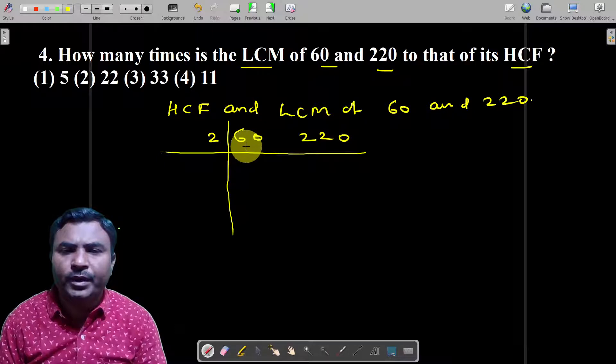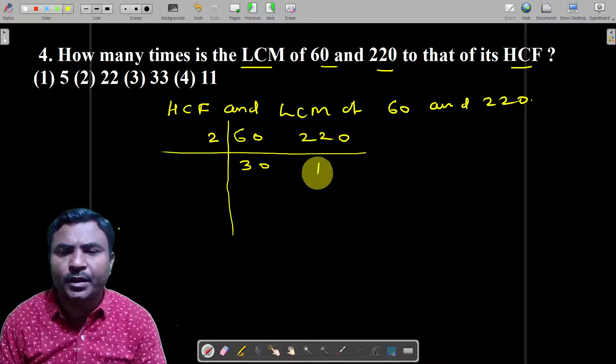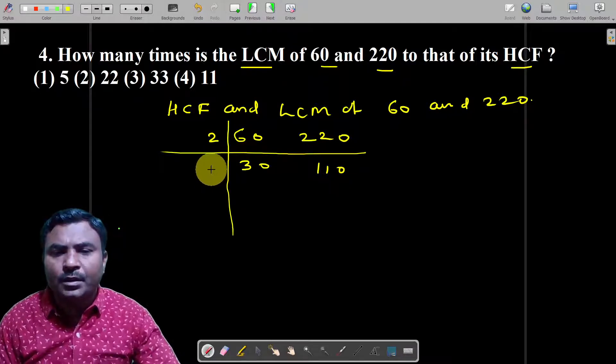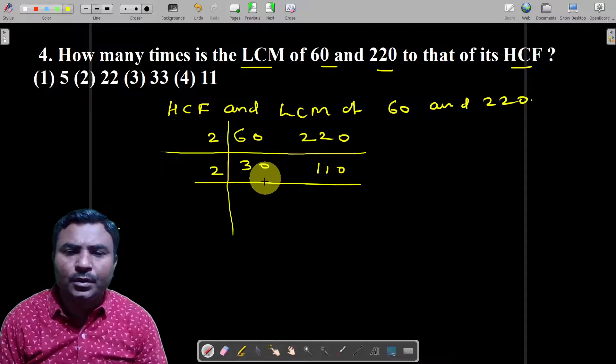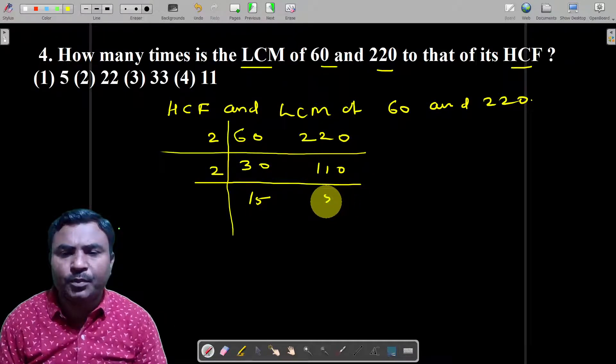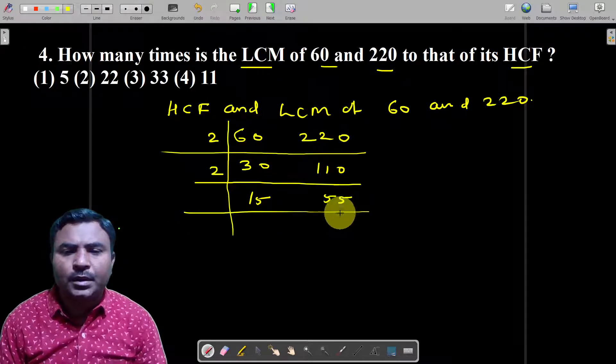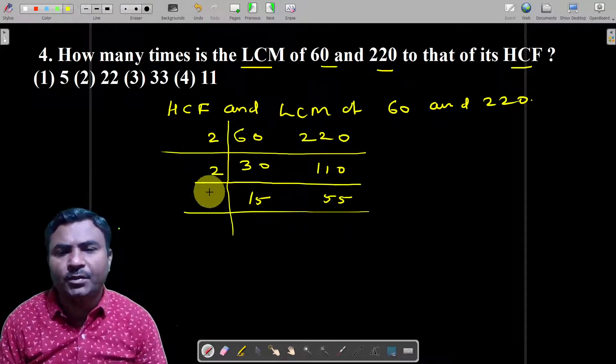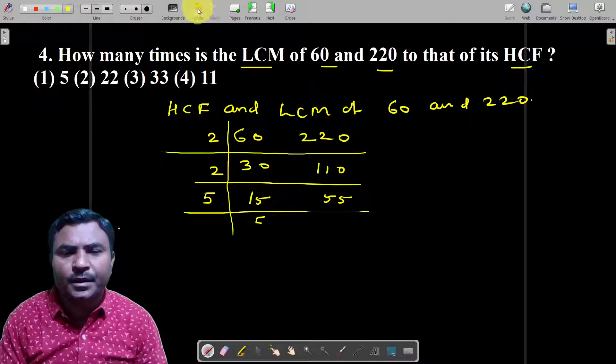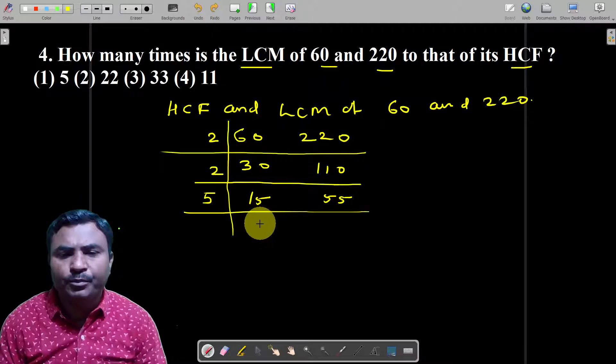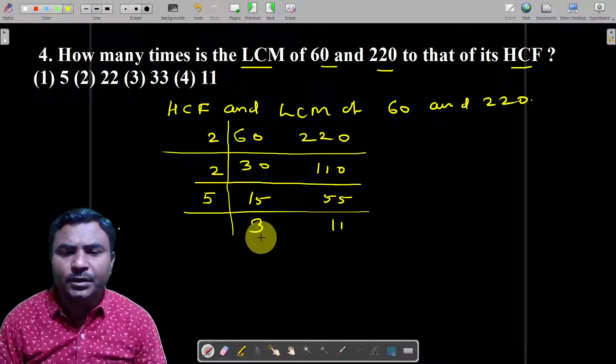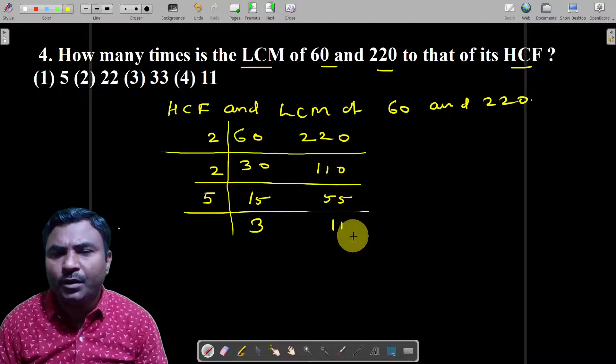2 divided, 2 divided, 3 divided gives 13 and 110. Unit place is 2. Continue dividing: 5 divided gives 15 and 55, then 5 divided again gives 3 and 11. The 3 and 11 are non-common factors.